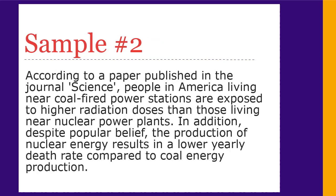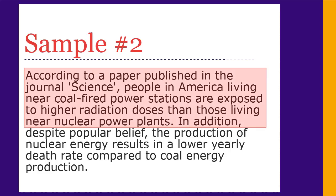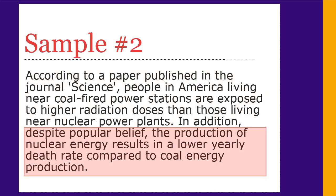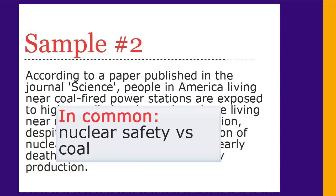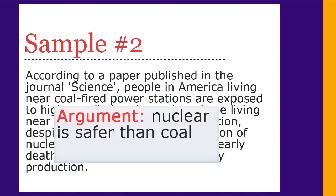Here is an example. It's a short paragraph that doesn't have a topic sentence. Instead, it has two sentences, each of which makes a claim. The first claim is that people who live near coal-fired plants are exposed to more radiation than those living near nuclear plants. The second is that nuclear energy production results in fewer yearly deaths than coal production. What these have in common are examples where nuclear energy is safer than coal-fired energy. In summary, the main argument of this paragraph is that nuclear energy is safer.